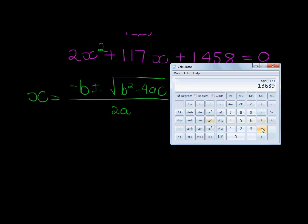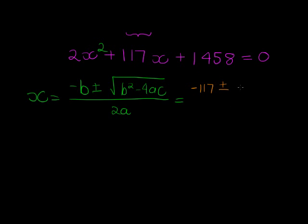B squared which is 117 squared minus 4 times a which is 2 times 1458 equals 2025. If I take the square root of that, and look at that, I promised you it was going to be a nice number, so it's plus or minus 45 divided by 2 times 2.